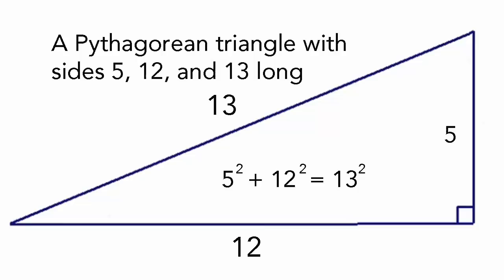Stepping up a dimension brings us to an unsolved problem that takes us back to our school days. At some point, we all learn about Pythagoras' theorem. In a right-angled triangle, the square of the hypotenuse, the longest side, equals the sum of the squares of the other two sides. A Pythagorean triangle is a special case where all the sides have a whole number of lengths. Familiar examples are the 3-4-5 triangle, because 3 squared plus 4 squared equals 5 squared, and the 5-12-13 triangle.